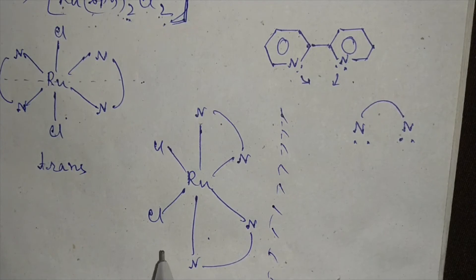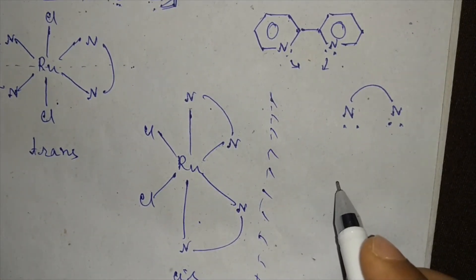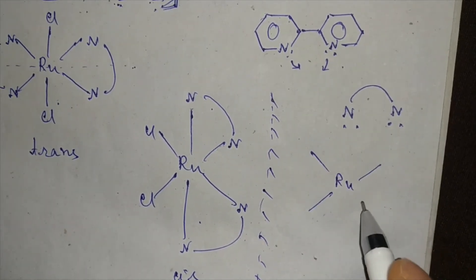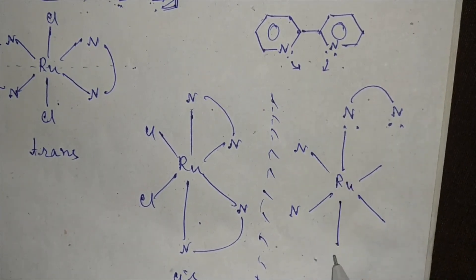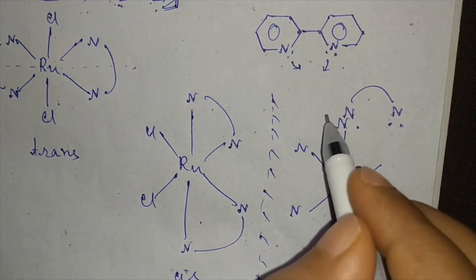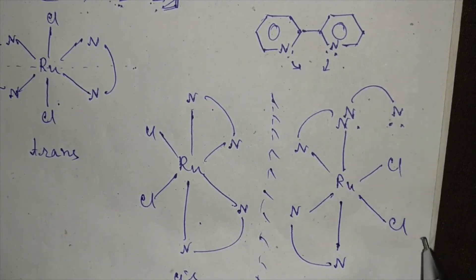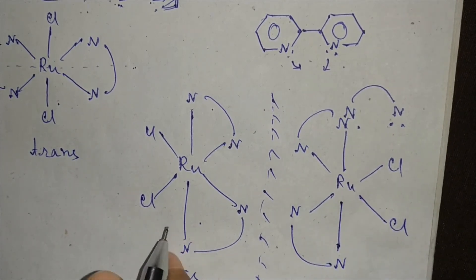One enantiomer of this molecule will be... nitrogen, nitrogen, this nitrogen, Cl, Cl, Cl. This is also cis, and these two are enantiomers to each other because they have a mirror image relationship.